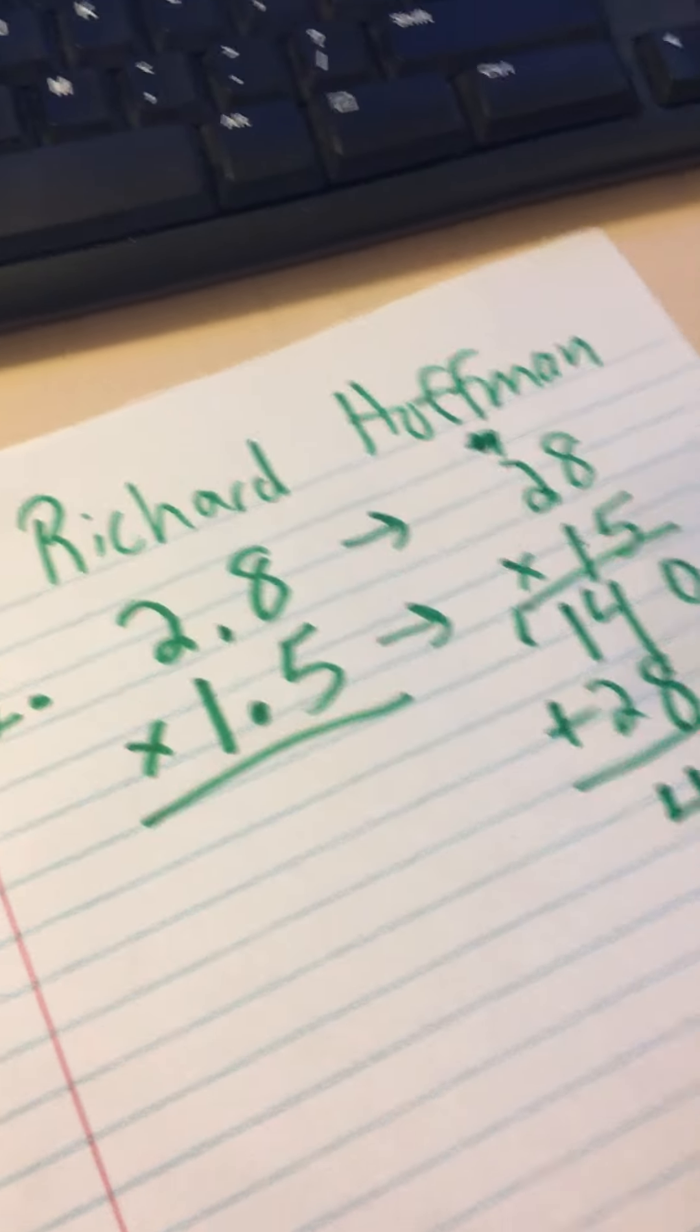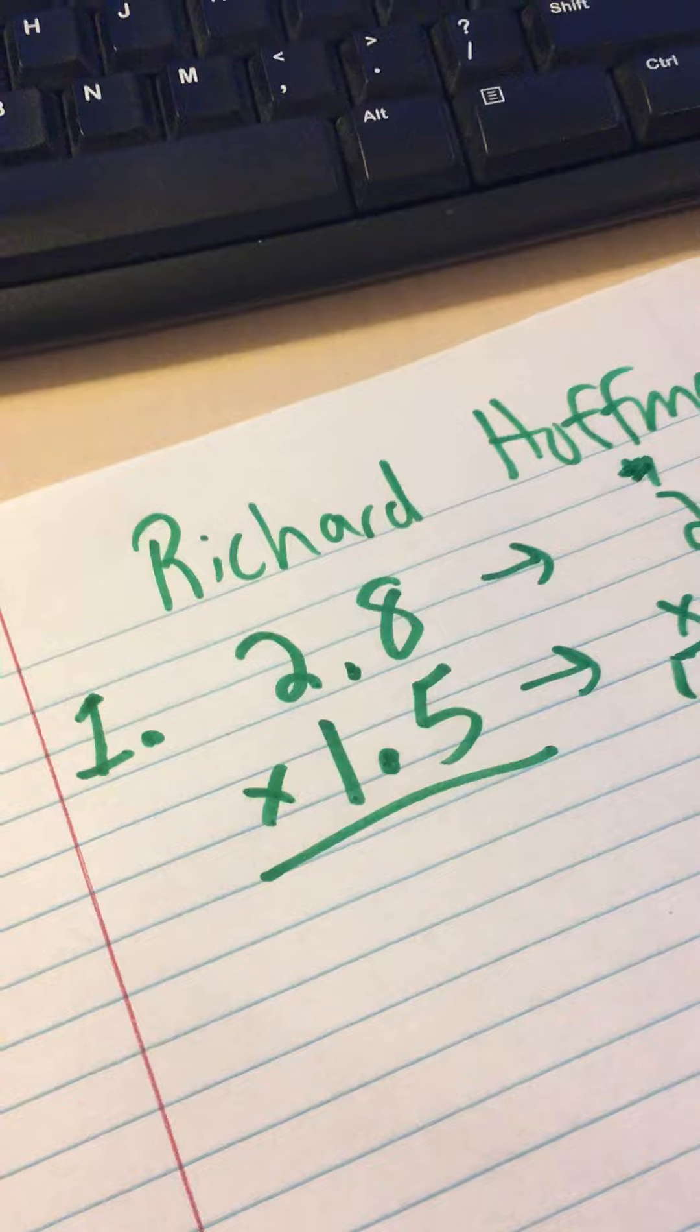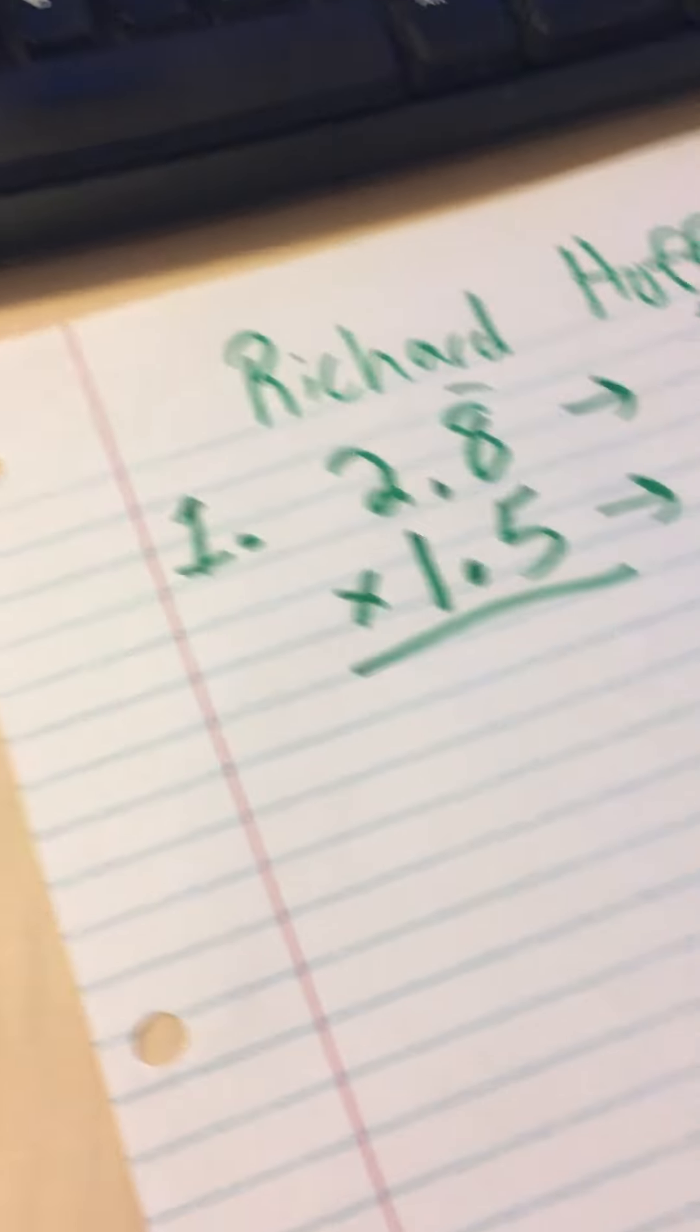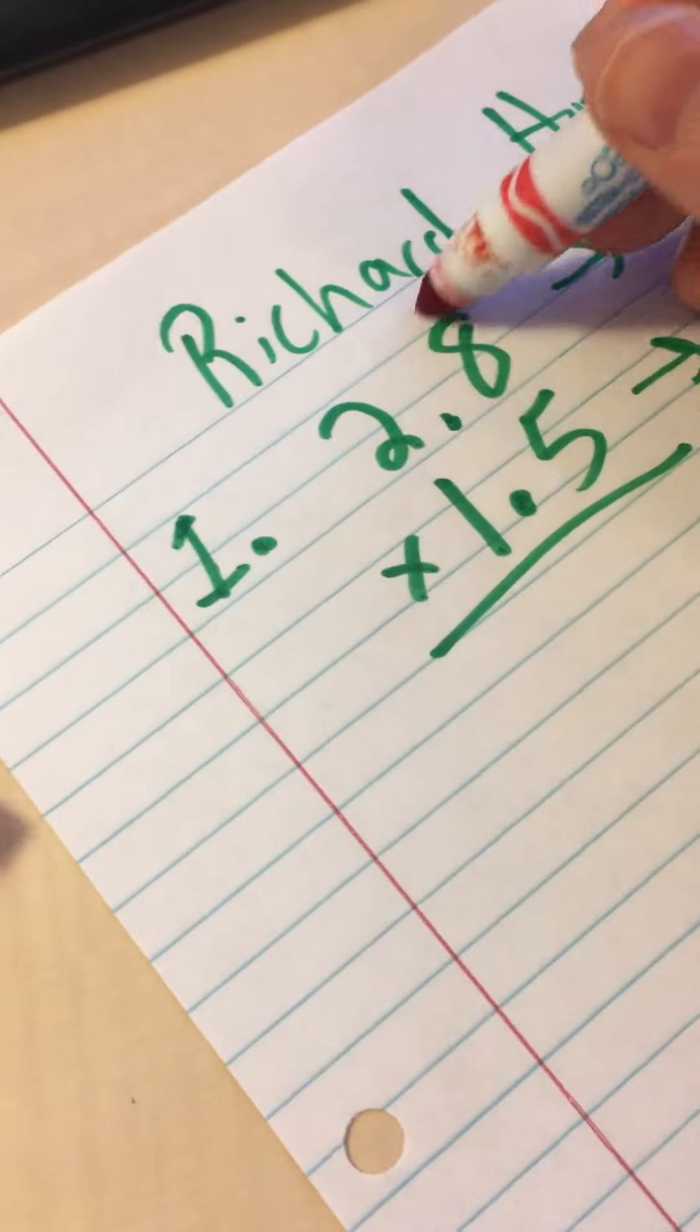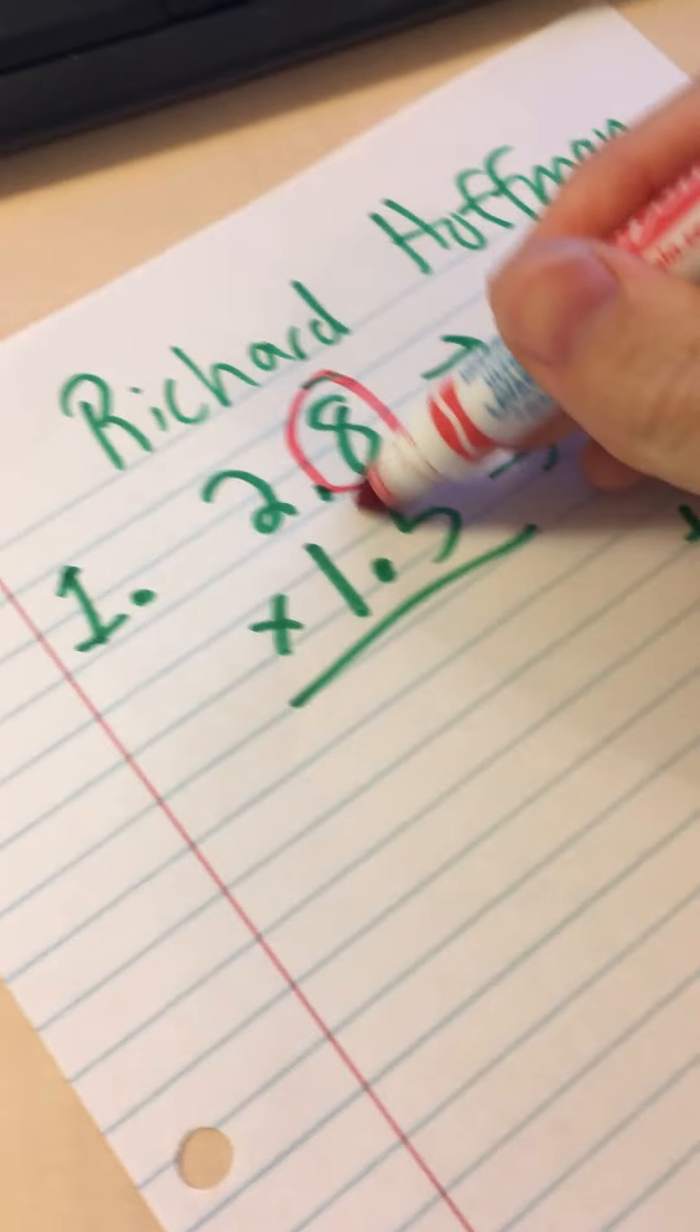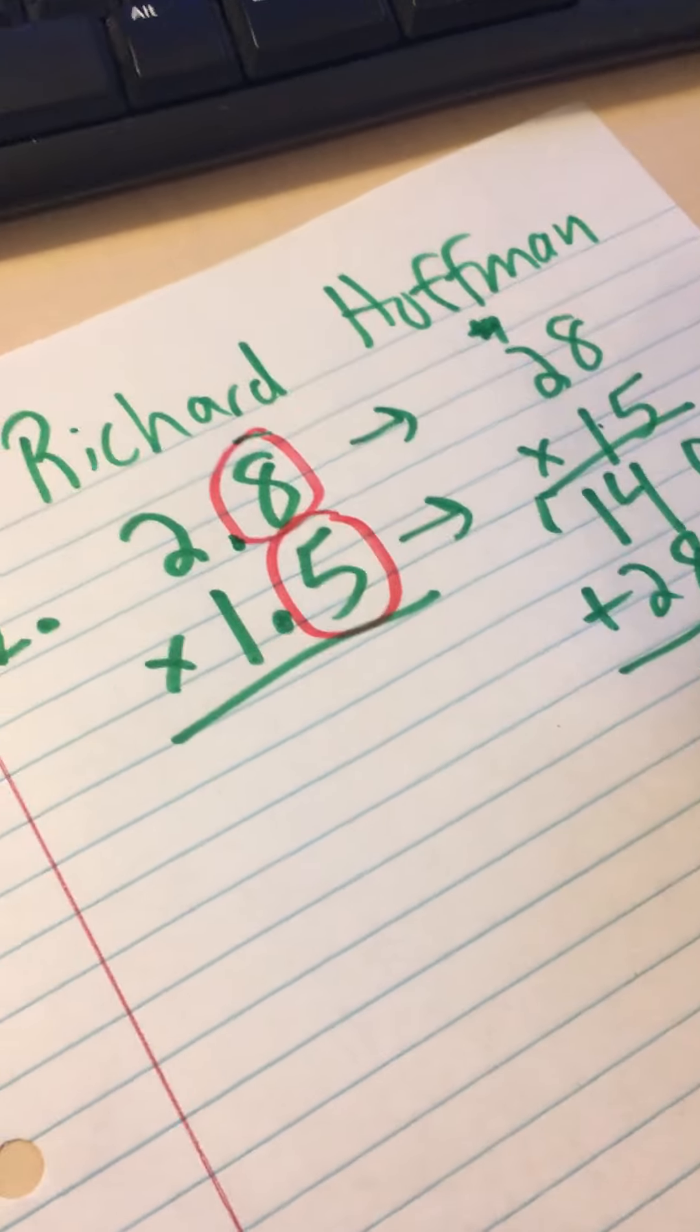That is the answer without the decimals. So how many decimal place value positions do I have in the original problem? This is where you could get a different color marker if you like. I'm going to have a little bit more fun with it, but you don't have to. One, whoops, rolling off the table. Two, two place values. So there are two decimal place value positions.